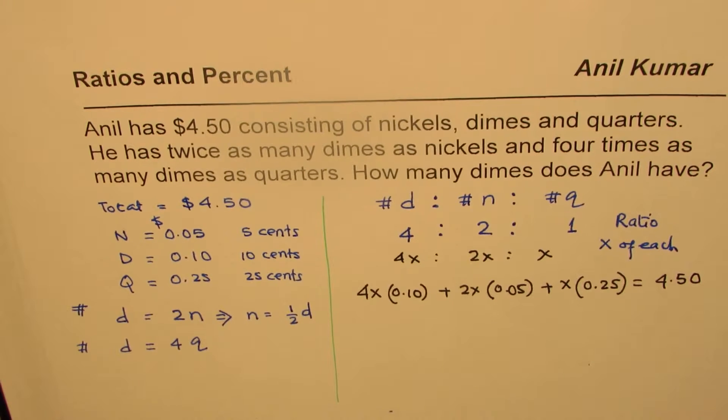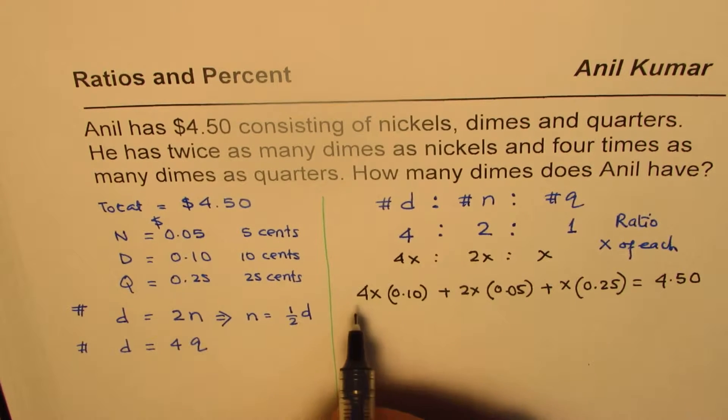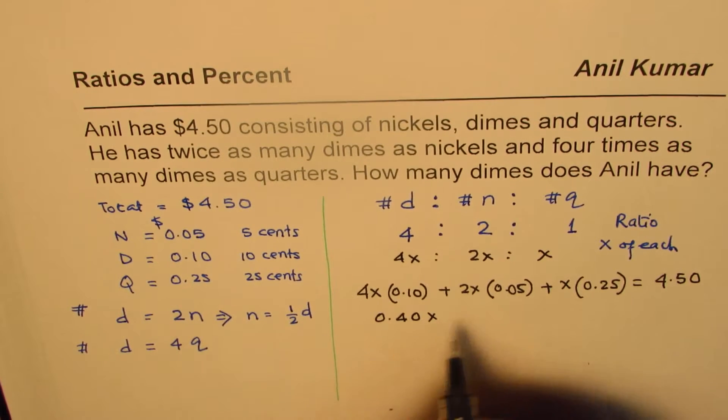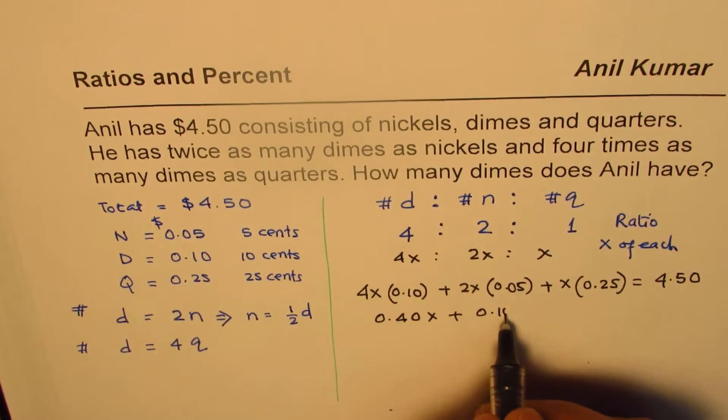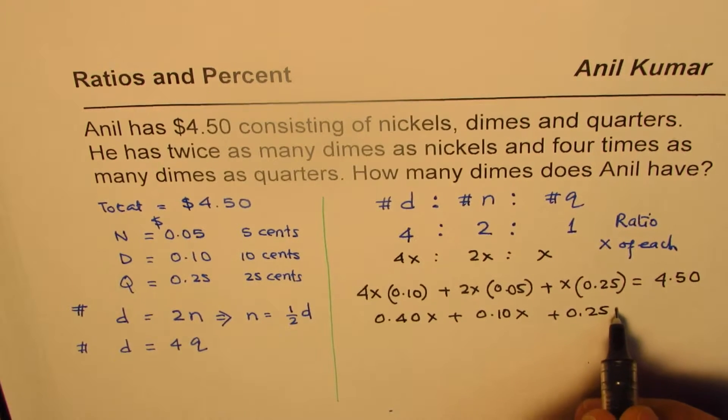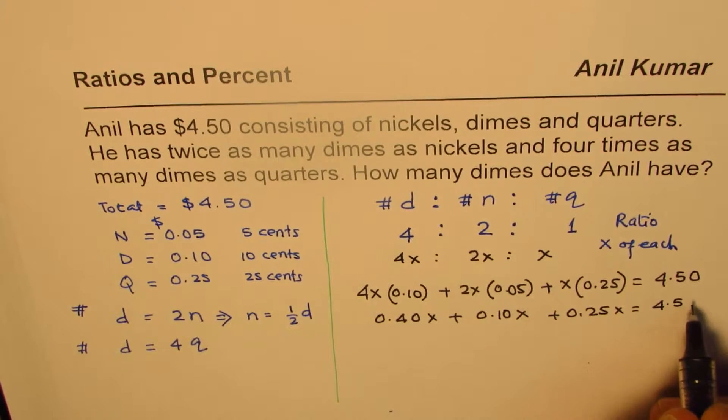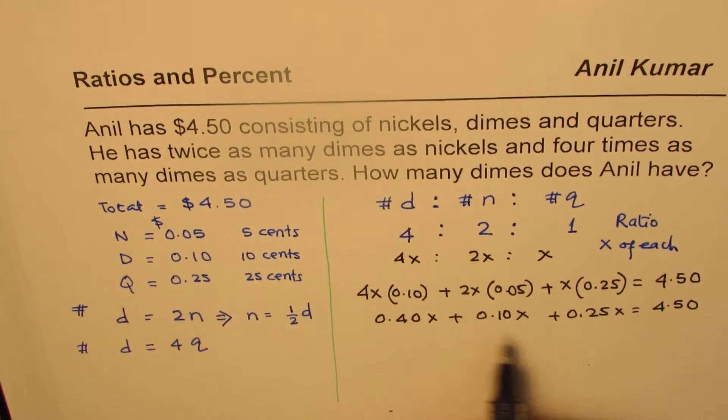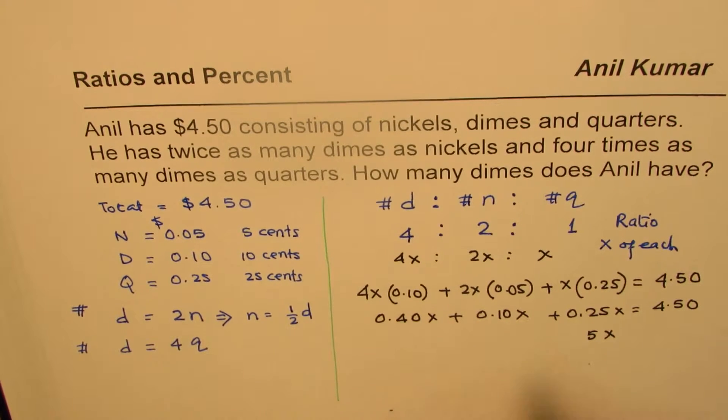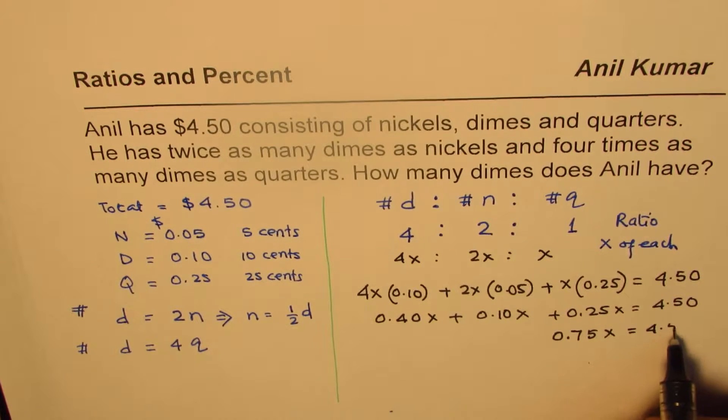So now we can actually add them up. So if I multiply this by 4, I get 0.40x times 2, will give us 2 times 5 is 10, 0.10x, and x times 0.25 is 0.25x, it is 4.50. Combining these, what do we get? So 5x, and then 2 plus 1 is 3, and 3 plus 4 is 7. So we get 0.75x equals to 4.50.